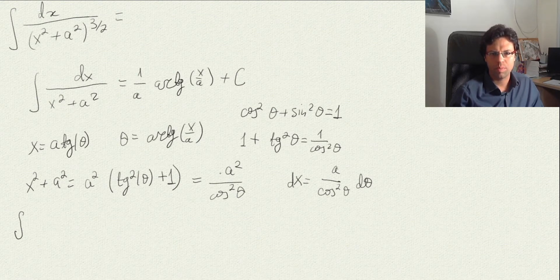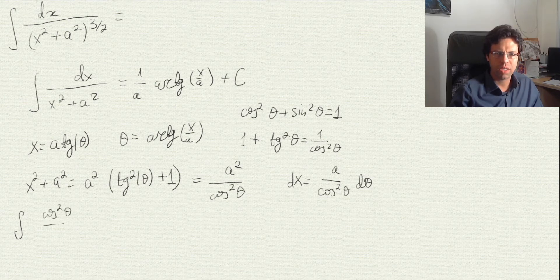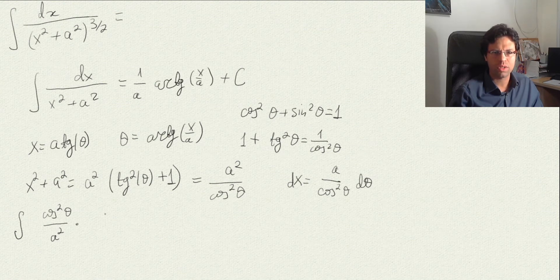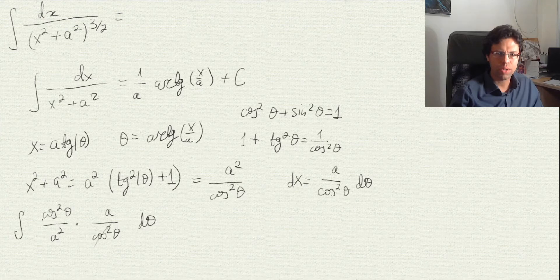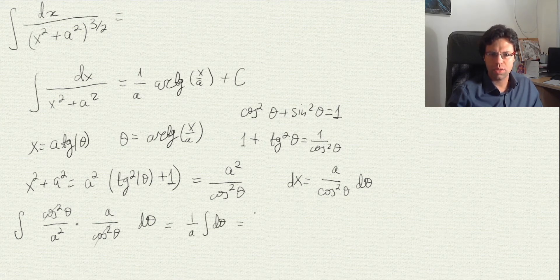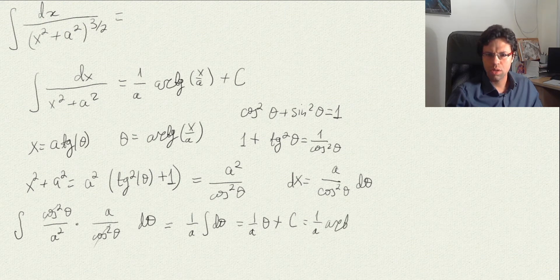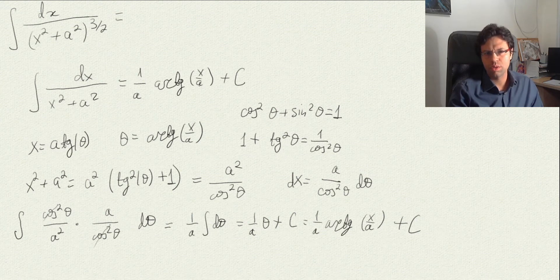Armed with these computations, substituting into the integral 1 over x squared plus a squared, we get cosine squared theta over a squared for the integrand factor, times a over cosine squared for dx. The cosine squared terms cancel, leaving 1 over a times the integral of d theta, which equals 1 over a times theta plus a constant. Since theta is arctangent of x over a, we recover the result 1 over a times arctangent of x over a plus a constant.